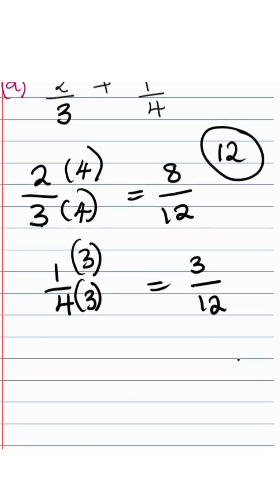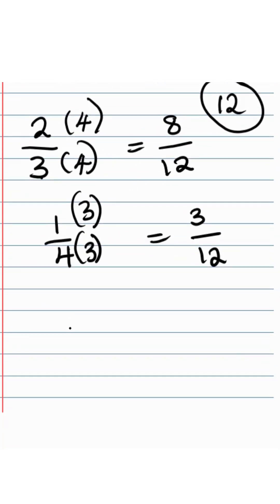And then after that, we can now add our fractions easily because now their denominators, both their denominators, are 12. So we'll just simply say 8 over 12 plus 3 over 12, which then is equal to 8 plus 3 becomes 11 over 12.